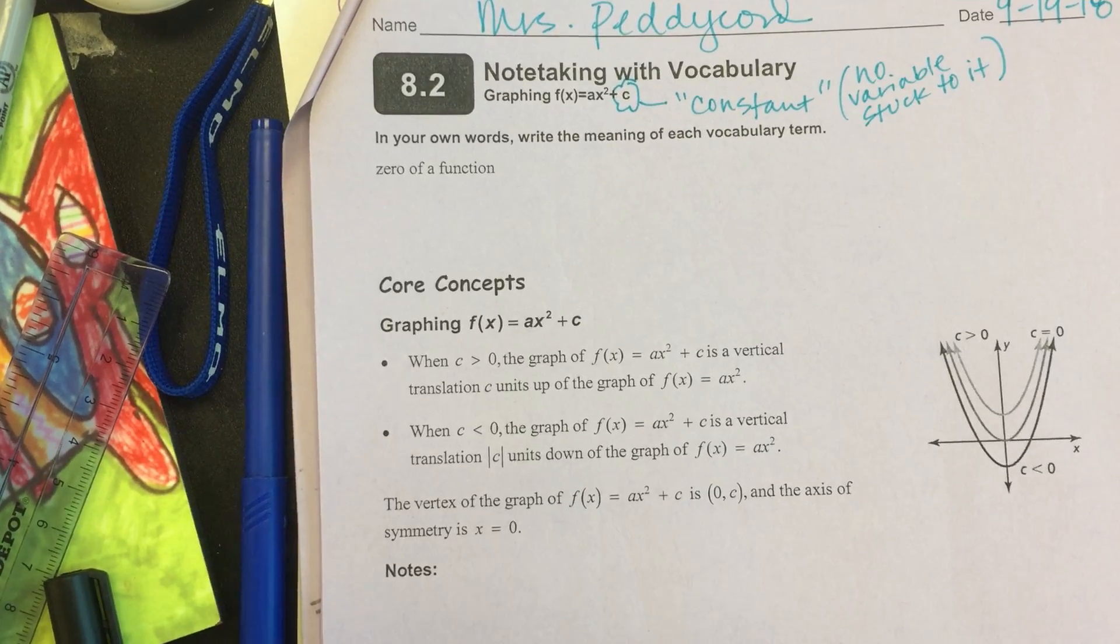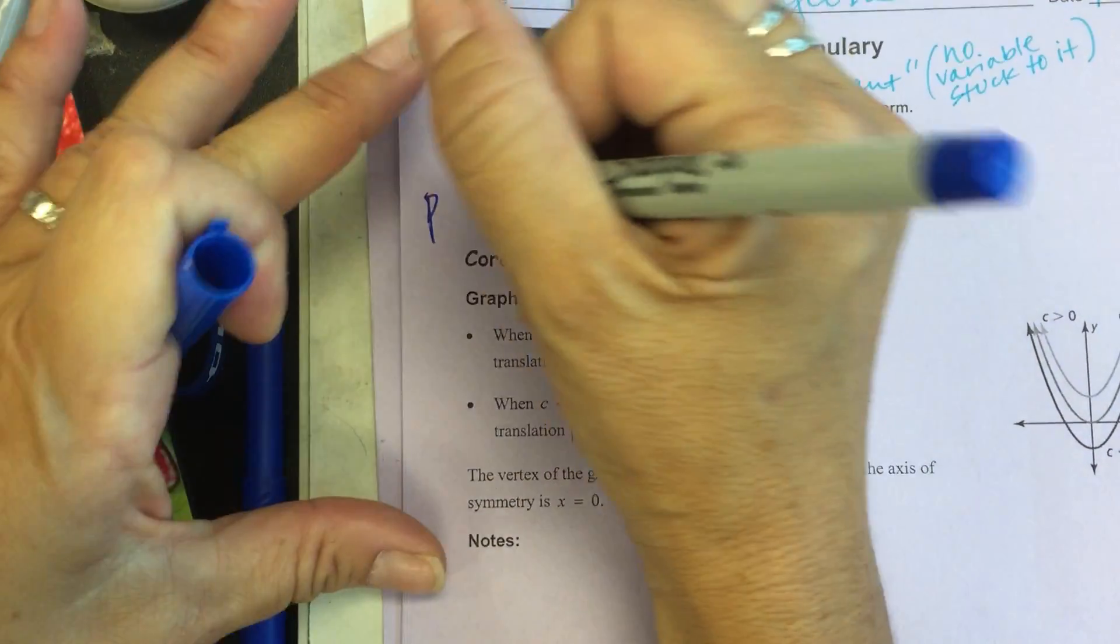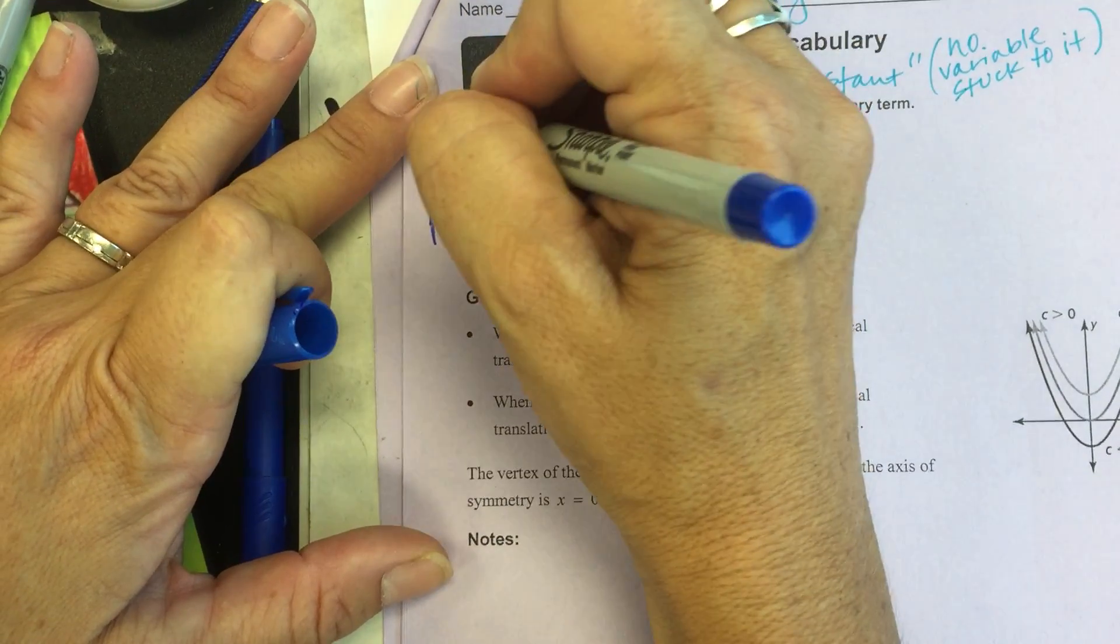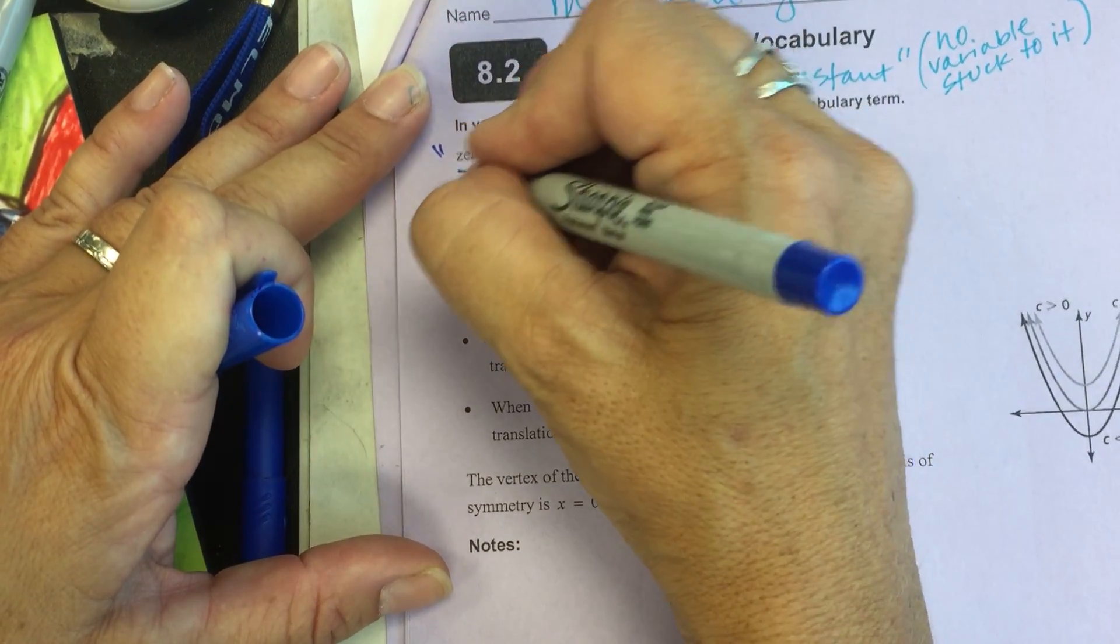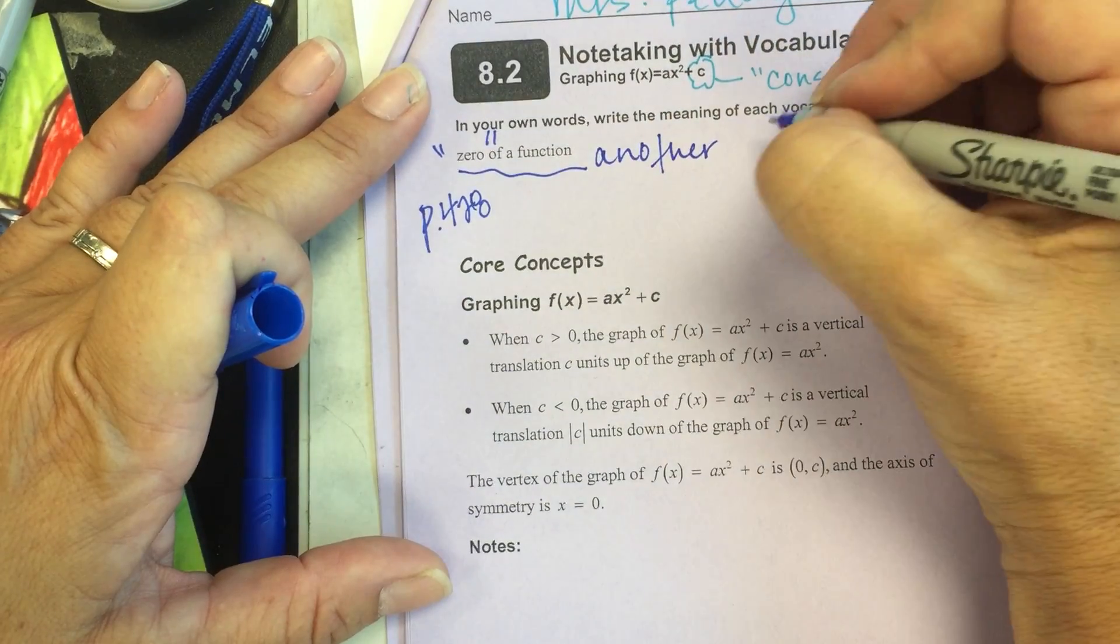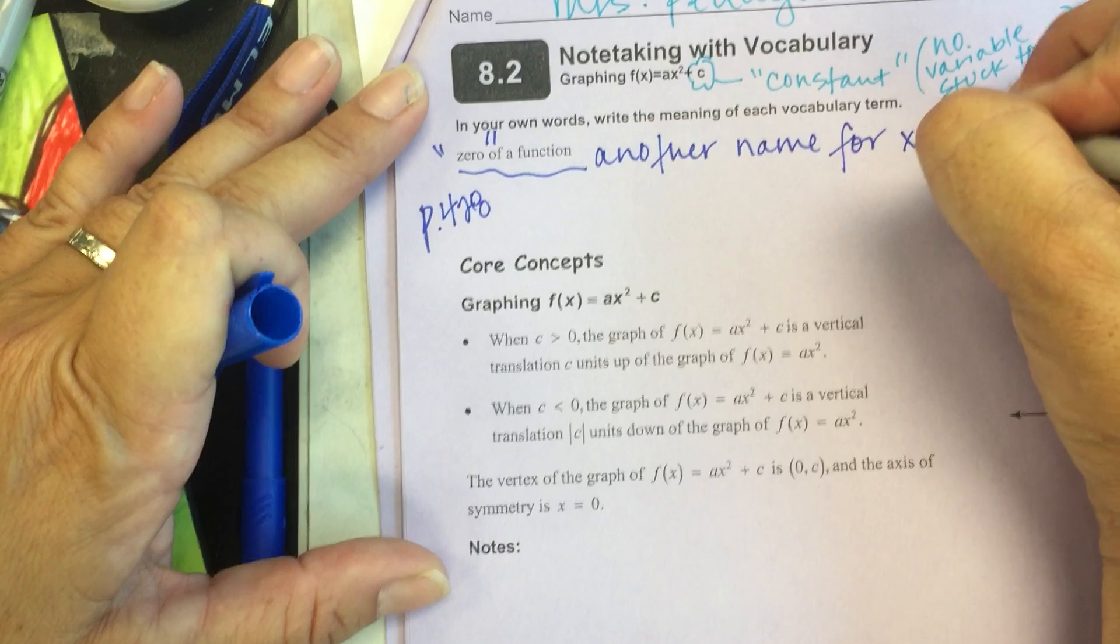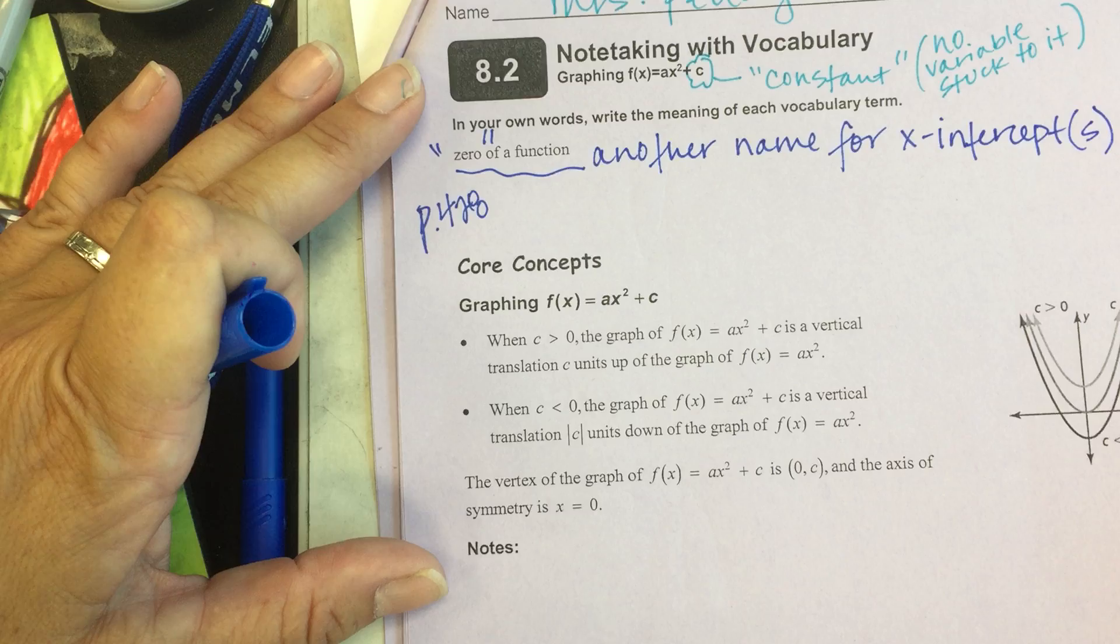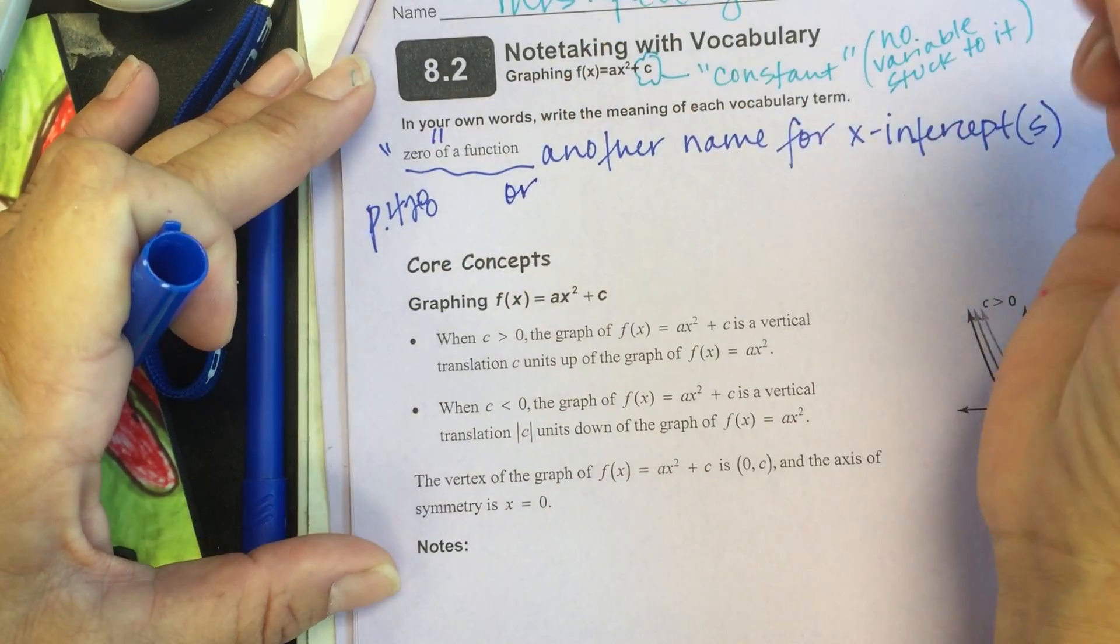Now, when you do get your books tomorrow, and this will help you out when I get you in your seat and say start looking at some stuff, this definition of a zero of a function starts on page 428. And the whole idea behind this zero thing, this is just another name for x-intercept of a parabola. It actually could be x-intercepts.